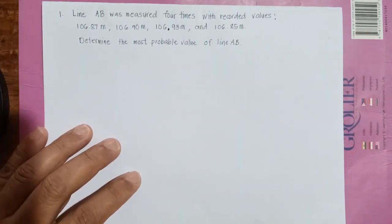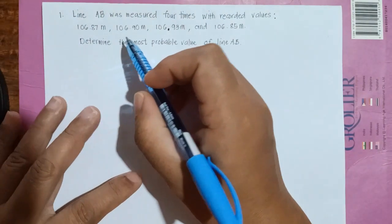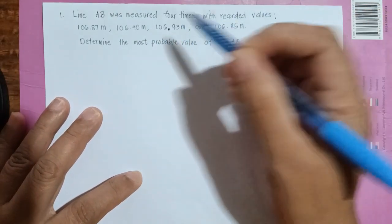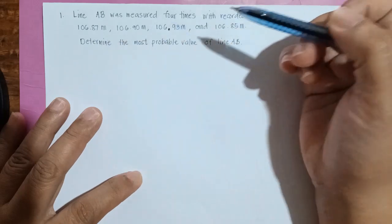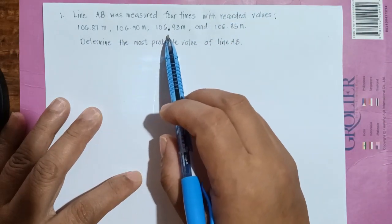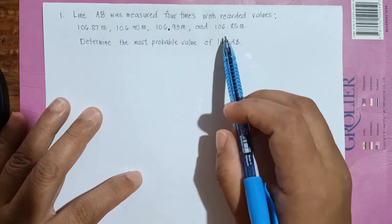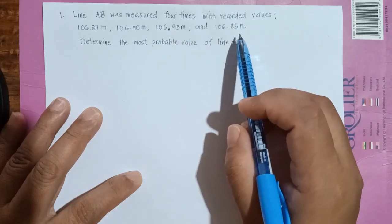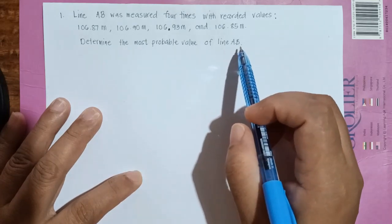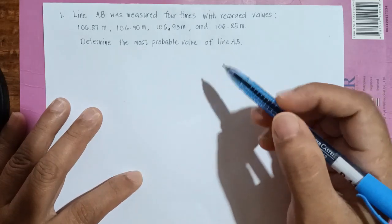Okay, so example number one: Line AB was measured four times with recorded values 106.87, 106.90, 106.93, and 106.85. And you are asked to solve the most probable value of line AB, so meaning to say there is a line AB.